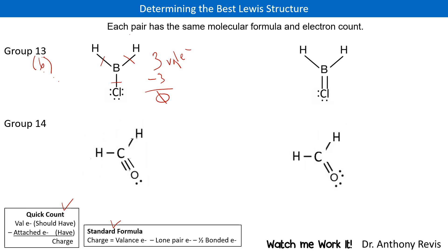Let's just check out chlorine here too. Chlorine should have 7, and around it we have 2, 4, 6, 7. The 7 valence electrons minus 7 gives us 0. So this has a 0 charge. Hydrogen checks out with a 0 as well. So the overall molecule has a 0 charge and there are no charges on any atom — that's a pretty good Lewis structure.